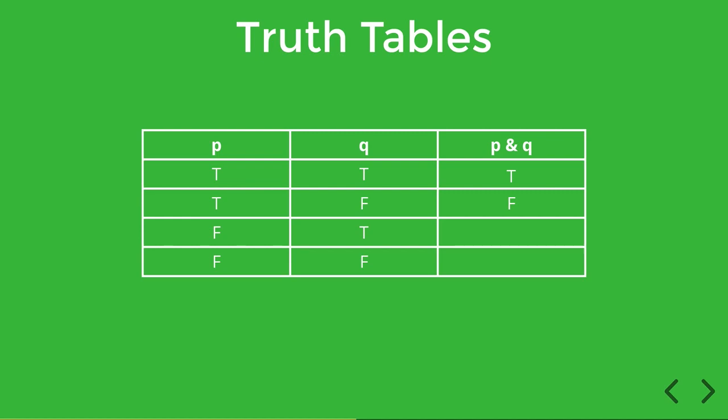In row three, P is false and Q is true. So again, only one of the two is true, therefore the conjunction is false, so we put F in row three of the final column.